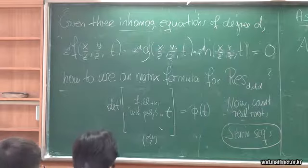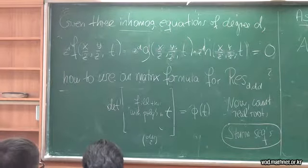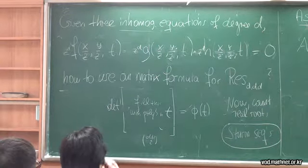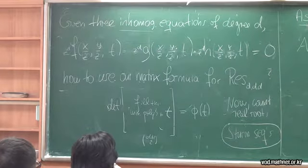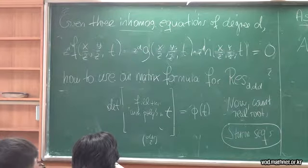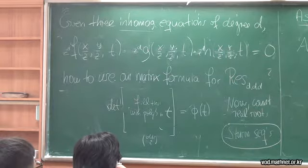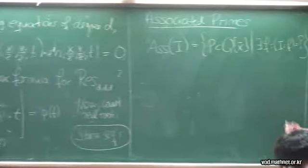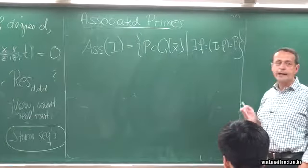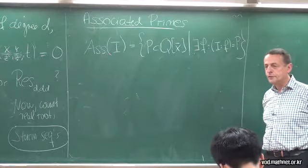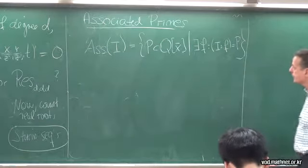So the key trick is: you start with inhomogeneous equations and you homogenize two of the three variables. The rest of the morning I'd like to talk about primary decomposition, which is the algebraic language for decomposing varieties into irreducible components.